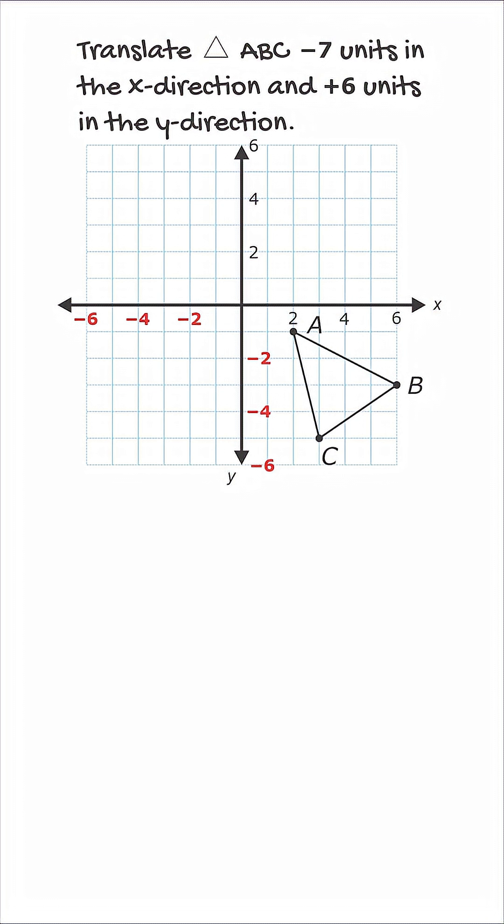In this problem, we're asked to translate triangle ABC by negative 7 units in the x direction and positive 6 units in the y direction.